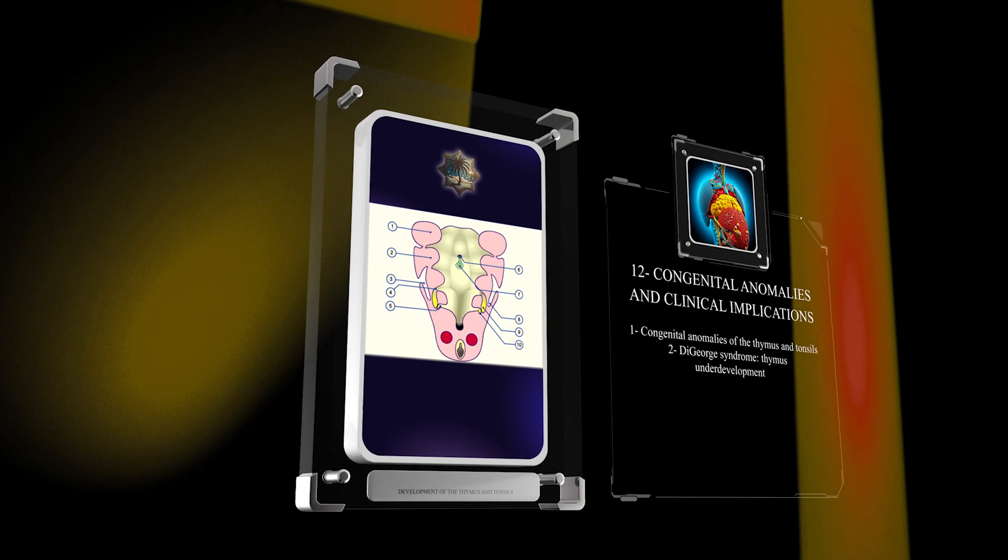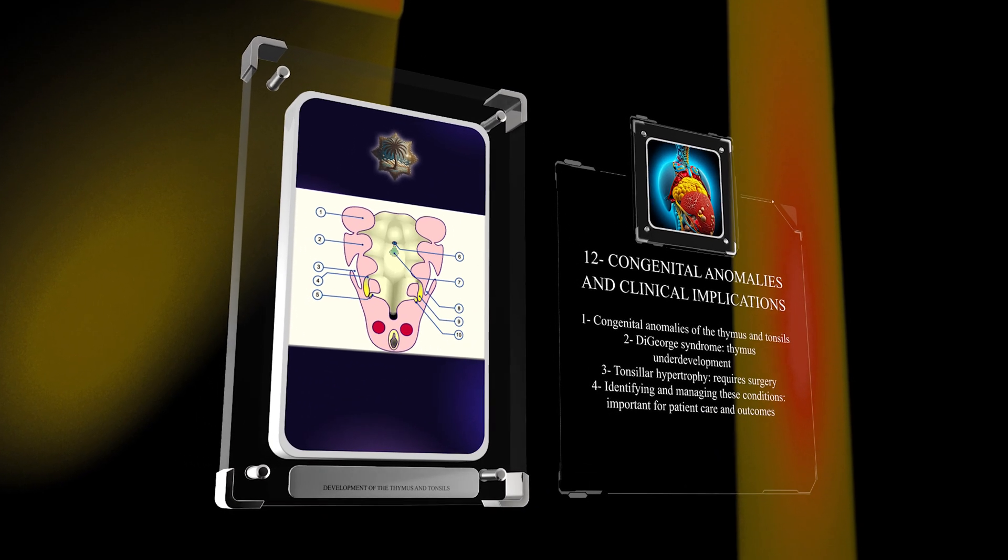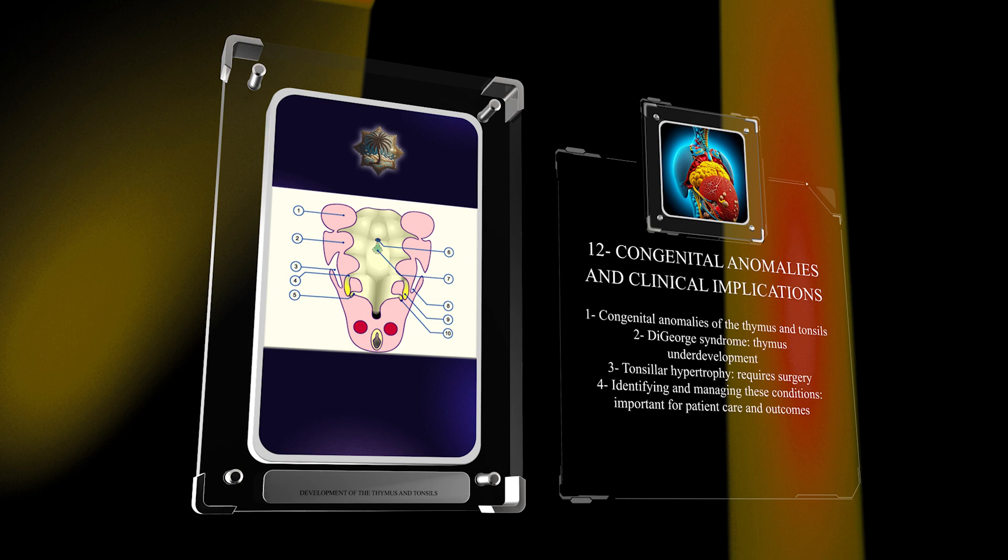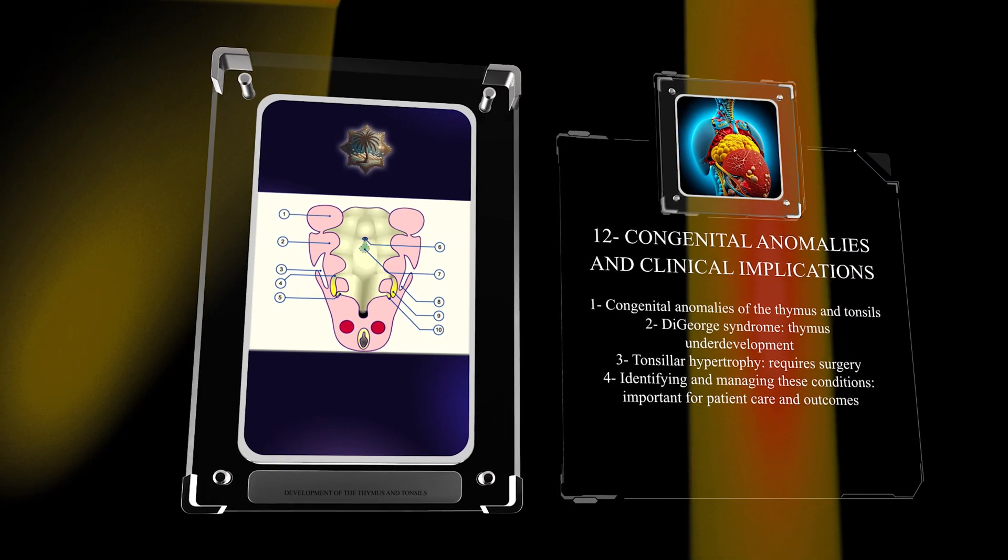Congenital anomalies of the thymus and tonsils have clinical implications. DiGeorge syndrome is characterized by thymus underdevelopment, while tonsillar hypertrophy often requires surgery. Identifying and managing these conditions is important for patient care and outcomes.